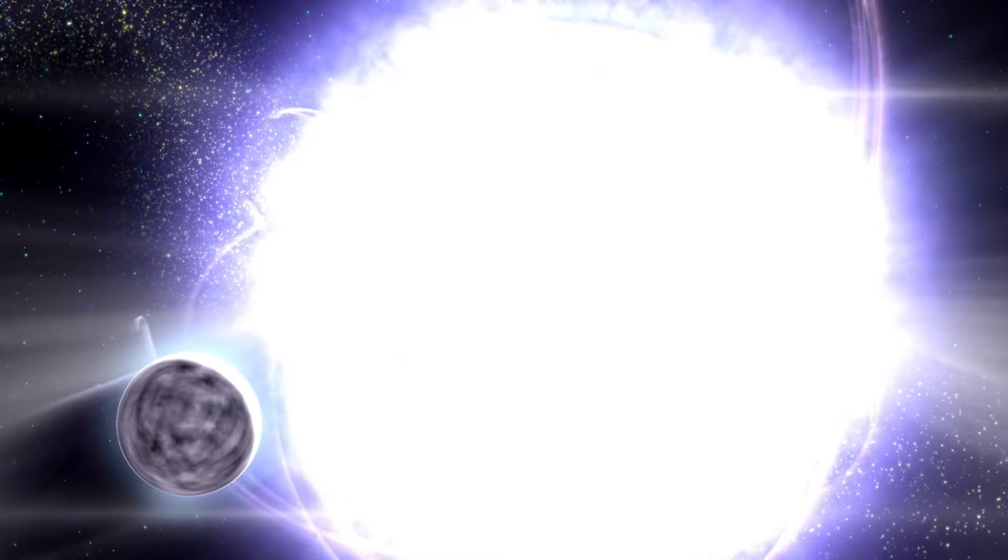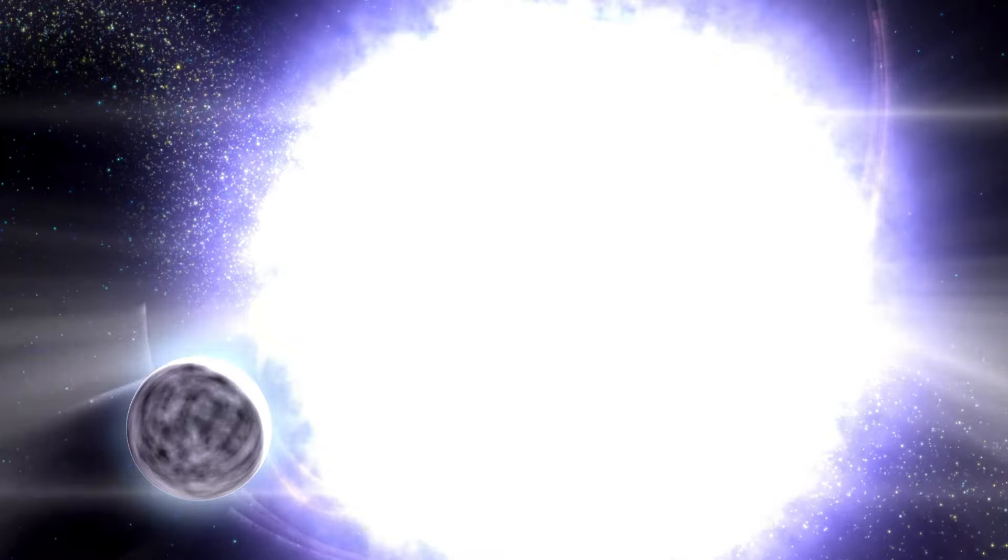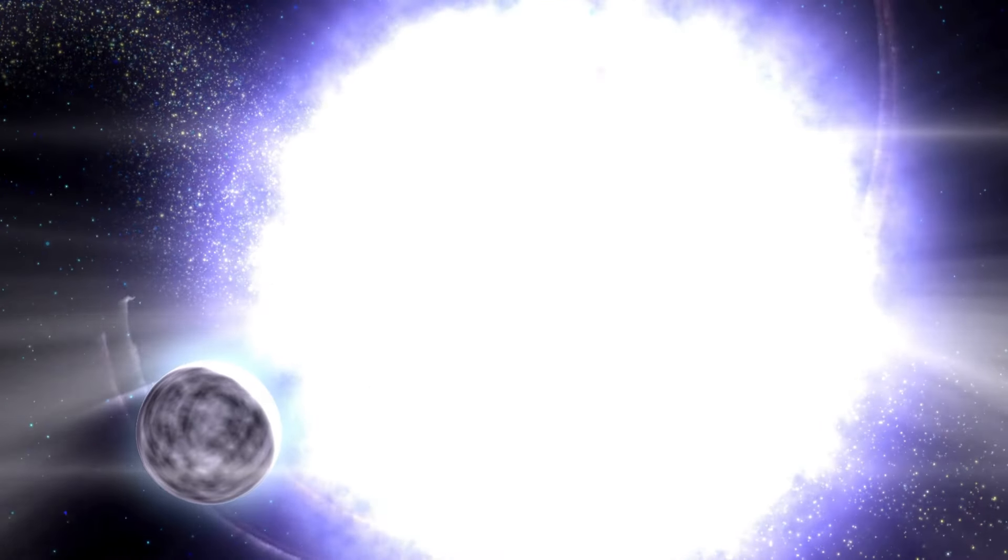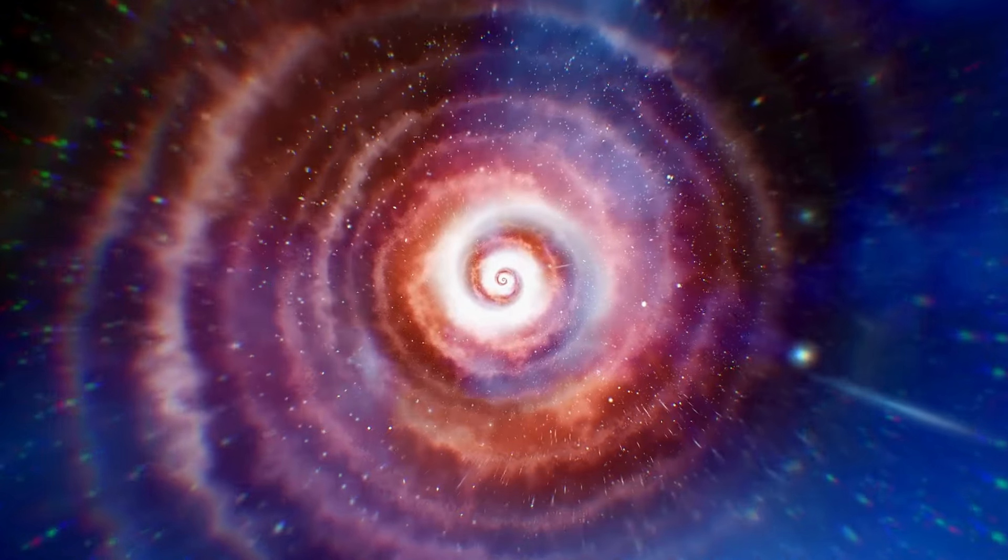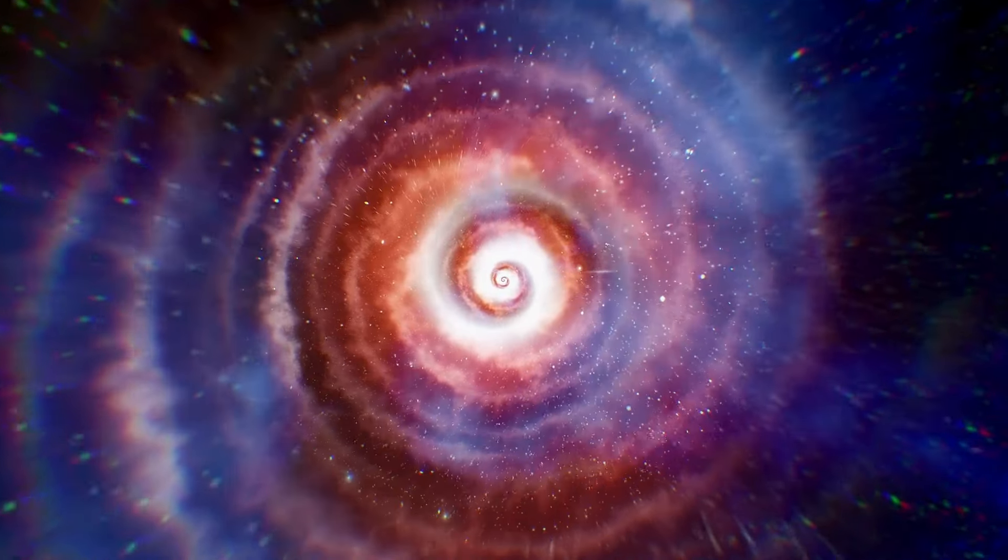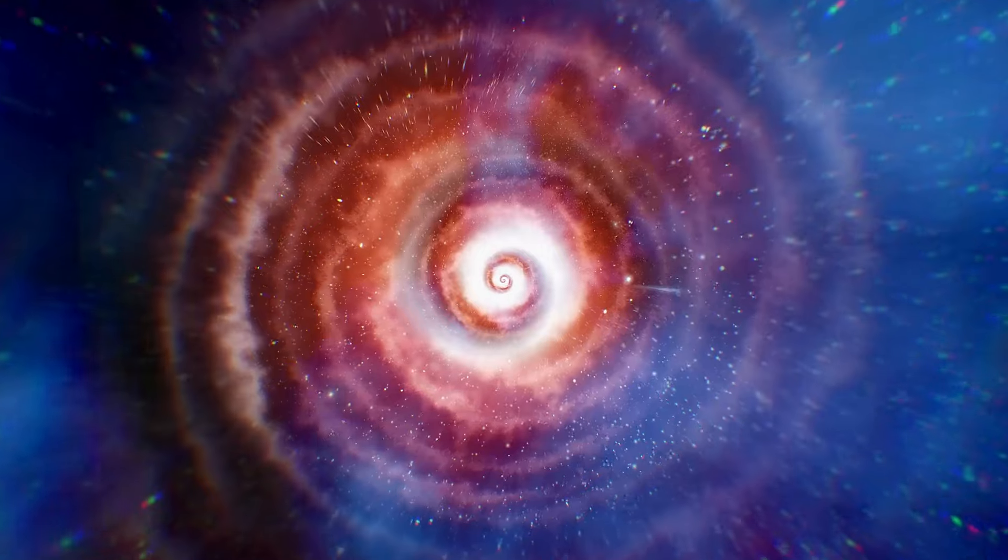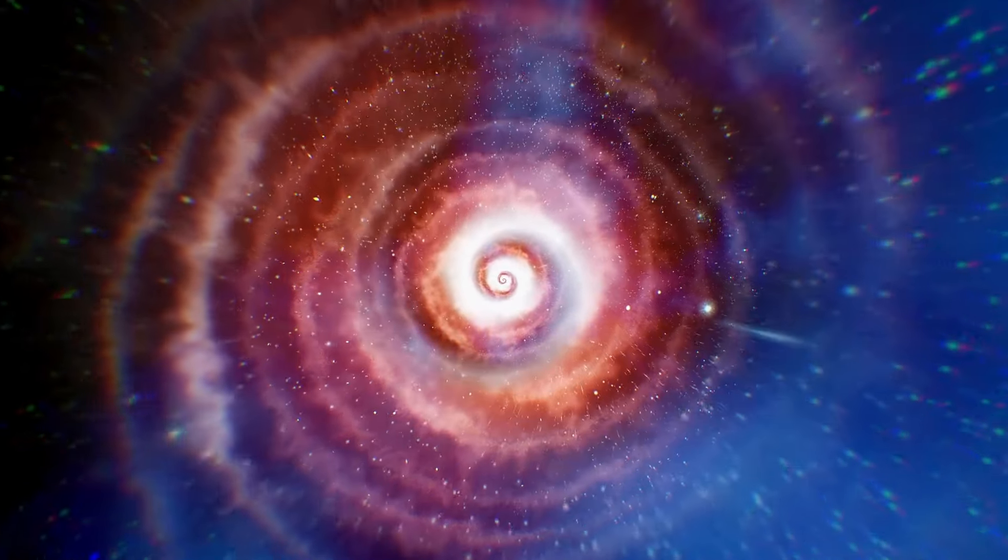Then comes the climax, when iron starts forming at the core. Unlike lighter elements, iron doesn't release energy when fused, so the energy produced isn't enough to resist the star's own crushing gravity. The star balloons in size and creates an implosion followed by a massive rebound effect, resulting in the explosive force of a supernova.